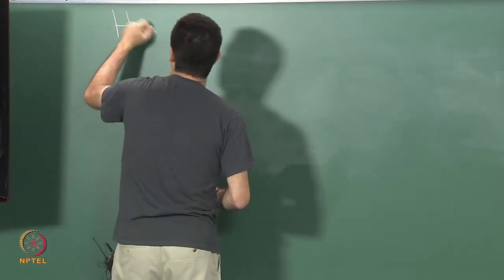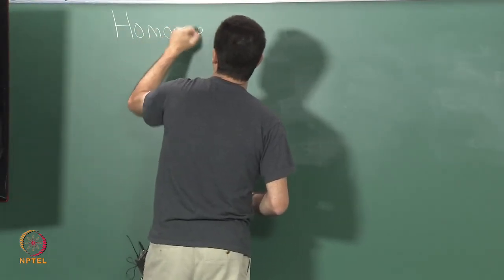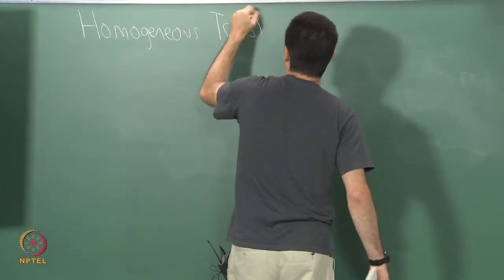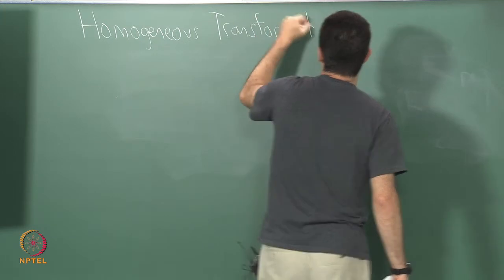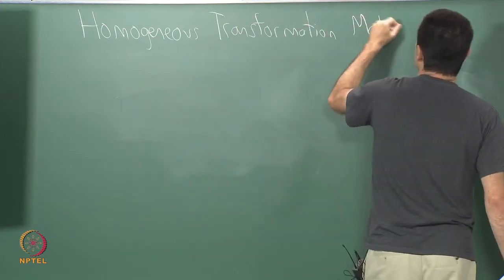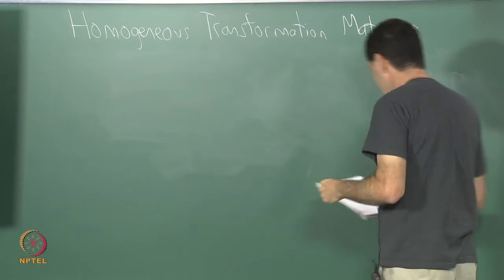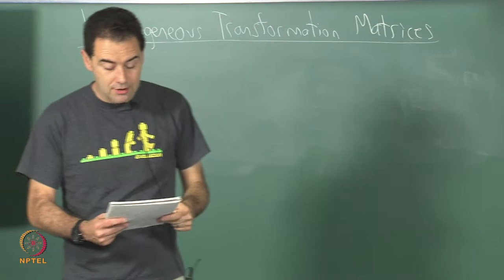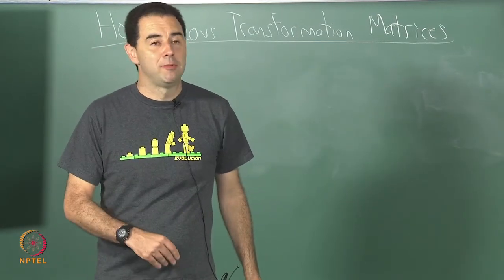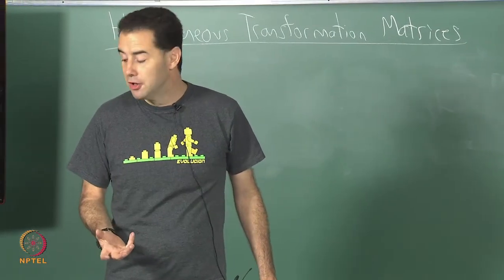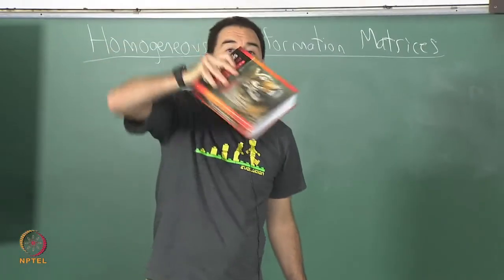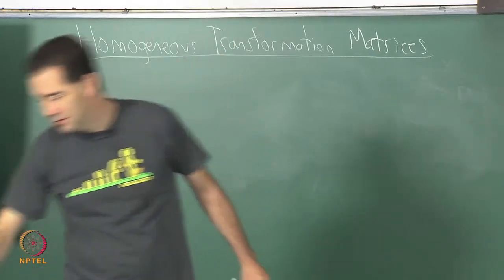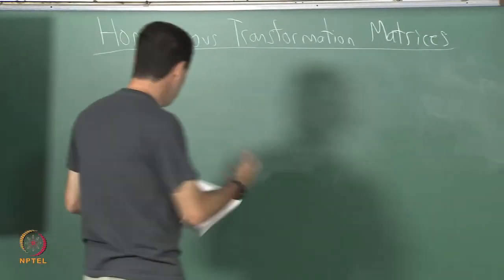Alright, let's do homogeneous transformation matrices. One of the reasons why I want to jump to this now is I want to combine rotation and translation because I need to use both of those operations to be able to place a rigid body anywhere I like in the world, right? Because these are the movable parts of our model, the movable models.